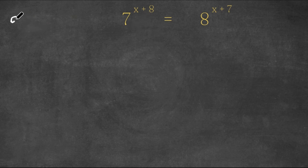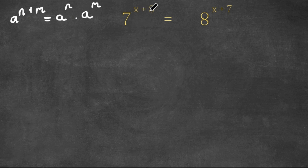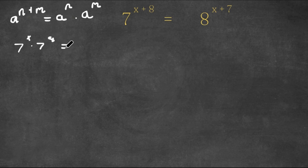Now, if we have something in the form a to the power of n plus m, this is equal to a to the power of n times a to the power of m. So as you can see right here, we have 7 to the power of x plus 8. This is going to equal 7 to the power of x times 7 to the power of 8. And this is equal to 8 to the power of x plus 7, which equals 8 to the power of x times 8 to the power of 7.